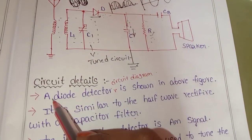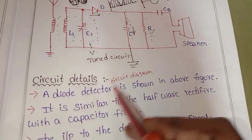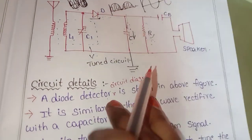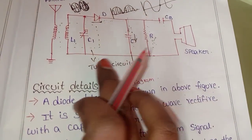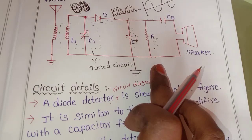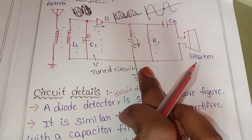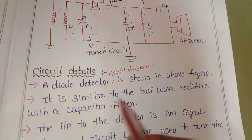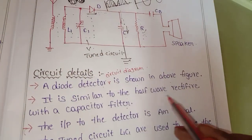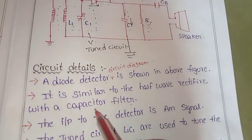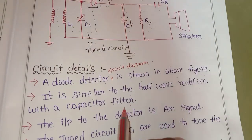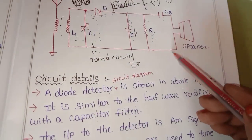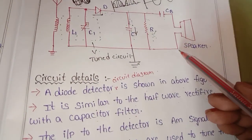A diode detector circuit diagram is shown in the above figure. Here is the diode detector circuit diagram. It is similar to the half-wave rectifier with a capacitor filter. This is the half-wave rectifier circuit we use.